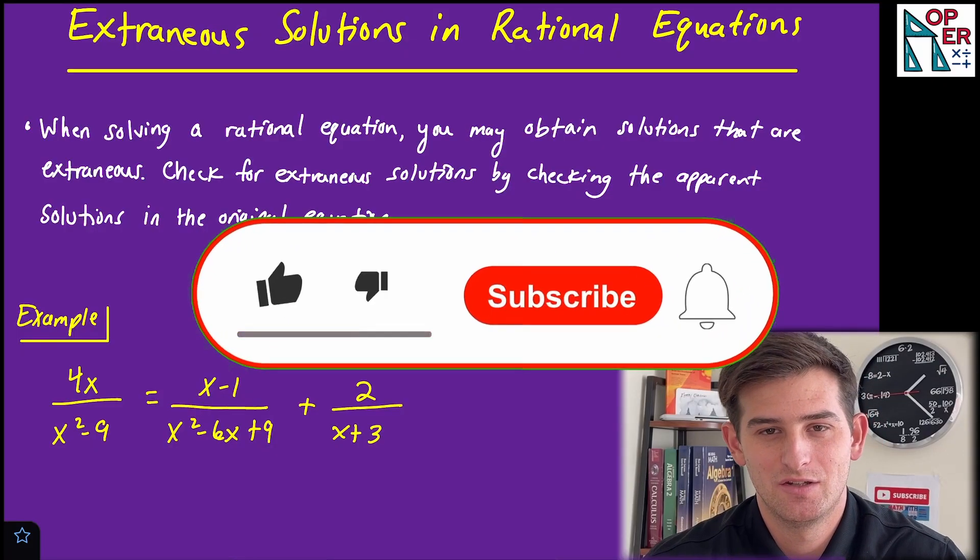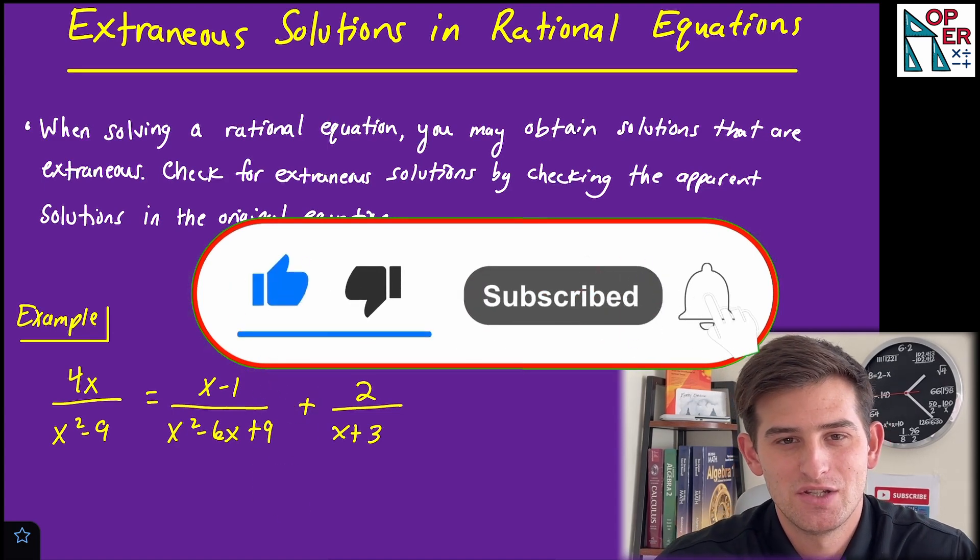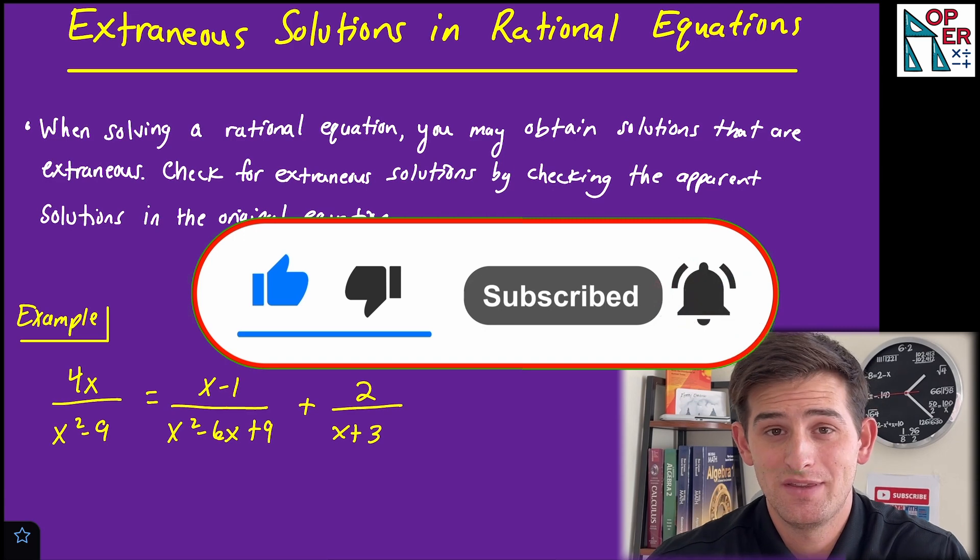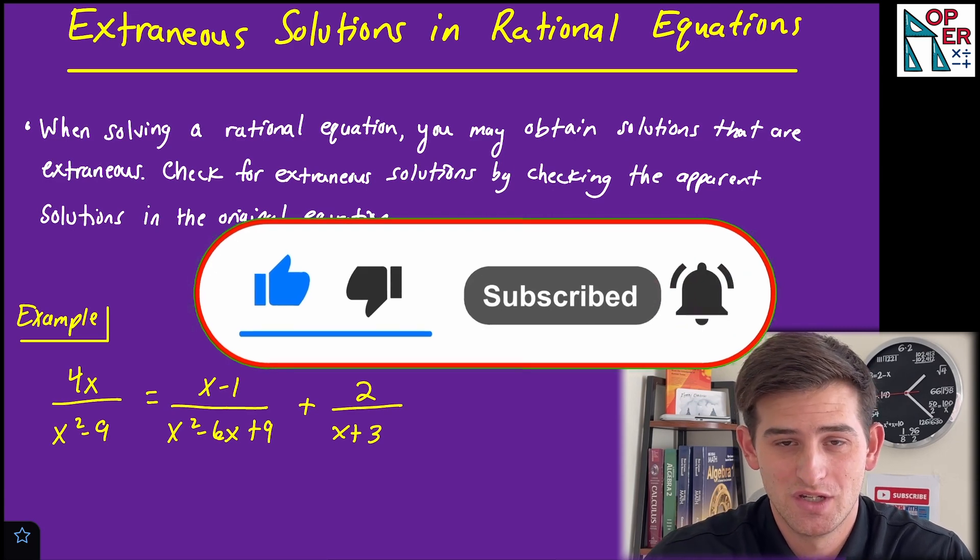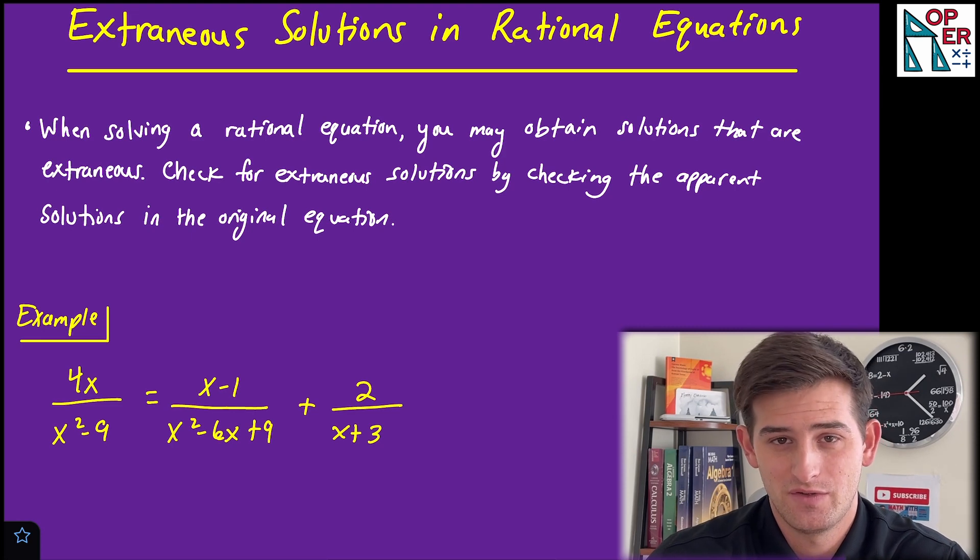Let's talk about extraneous solutions in a rational equation. So first of all, what is an extraneous solution? Well, it's just an apparent solution. So we do everything right, we solve the equation, we get the solution. But once we check that solution in our original equation, it actually produces a false result.